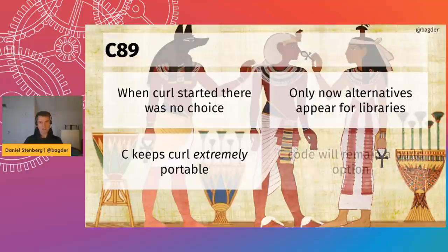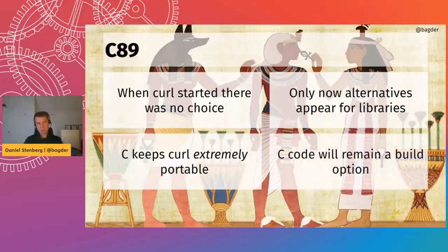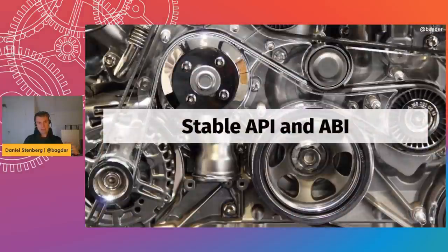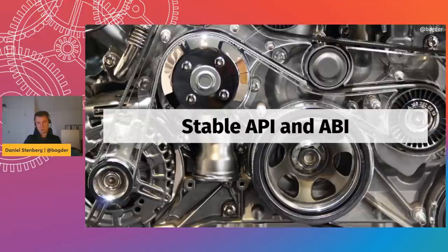While we're now talking about doing components and backends in Rust, the C code will remain a build option for all the different things. Curl is known as a command line tool where you type a URL and it fetches it, but primarily curl is the library: libcurl.